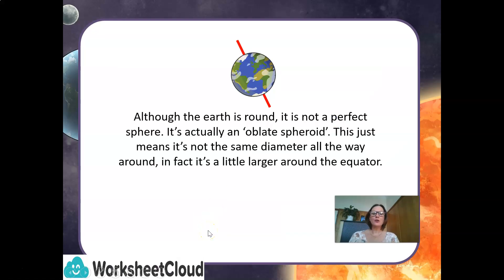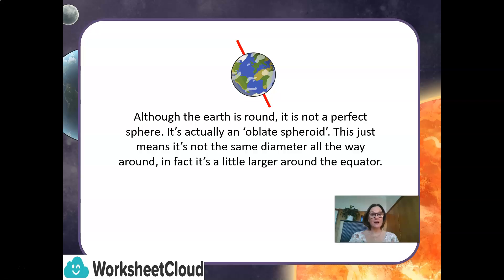Although the Earth is not a hundred percent round — it's not a perfect sphere — it's actually an oblate spheroid. This just means it's not the same diameter all the way around. In fact, it's a little larger around the equator.